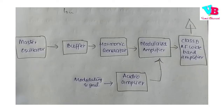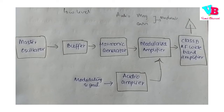Next we have the Low Level Transmitter. This is the basic principle of the Low Level Transmitter. Here we have a message signal and a carrier signal. These two are modulated together directly at a low power level, forming a modulated signal. That modulated signal is then amplified.